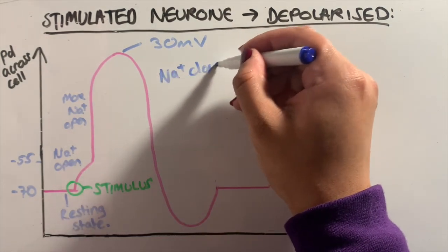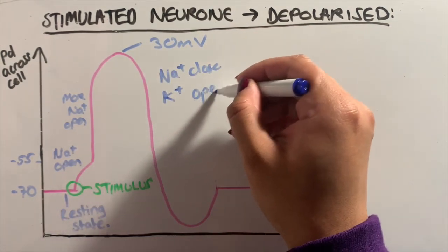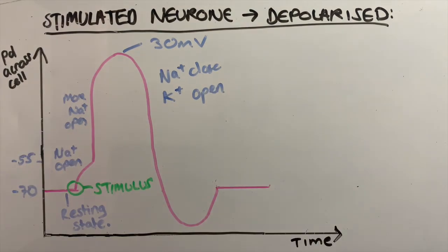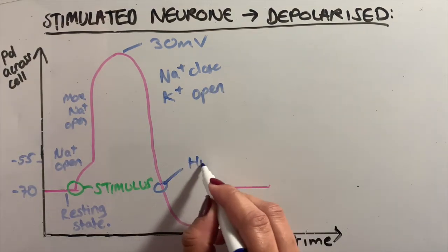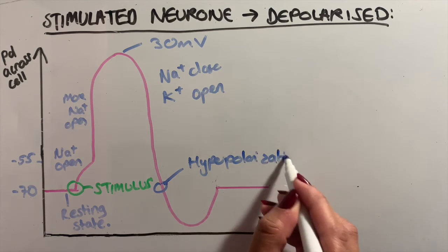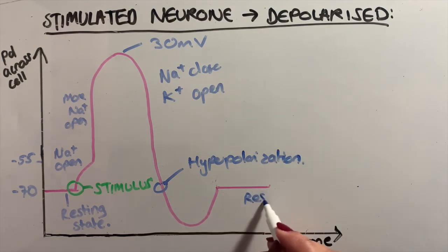This is where the sodium ion channels now close and potassium ion channels open. The membrane is now more permeable to potassium, so potassium ions diffuse out of the neuron down the potassium ion concentration gradient. This starts to get the membrane back into its resting state at minus 70 millivolts.